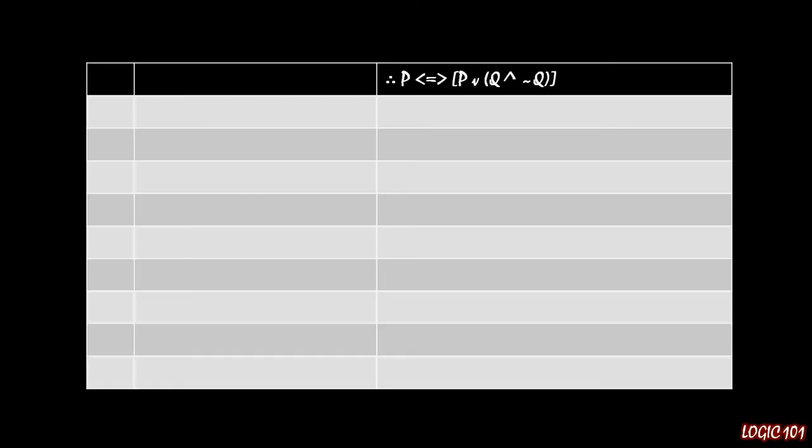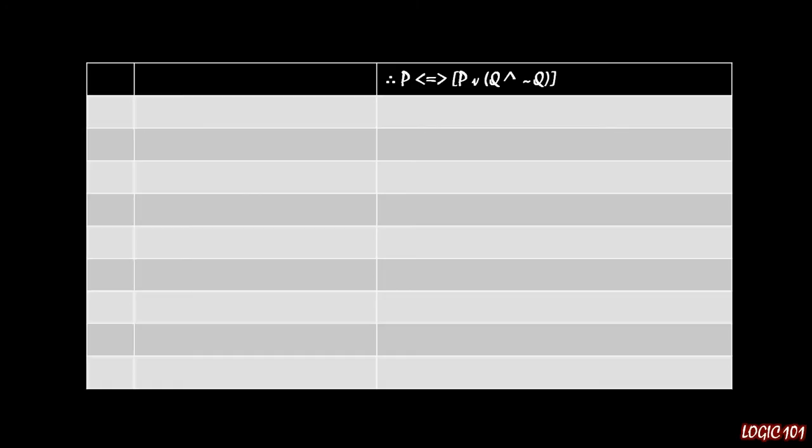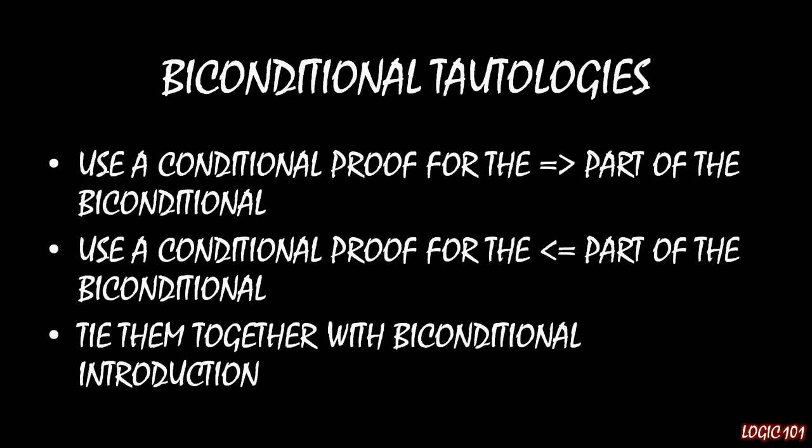Let's do this by example. Imagine you want to show that p if and only if p or q and not q is true. This is a biconditional because we have the if and only if operator, and it's a tautology because we have no premises to work with. So how do we go about doing this? Well, our three-step recipe is as follows.